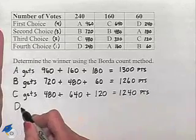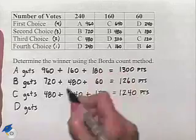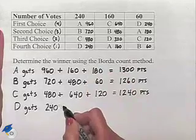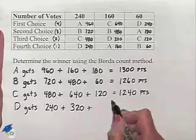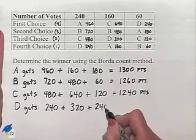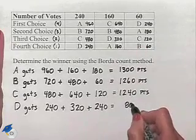And finally, D gets 240 points, plus 320 points, plus 240 points, for a total of 800 points.